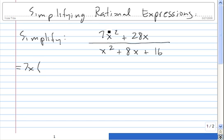If we take a 7x out of 7x squared, we're left with x. If we take a 7x out of 28x, we're left with a 4, plus 4.